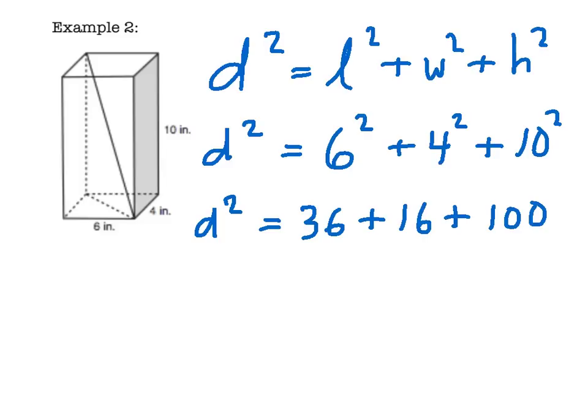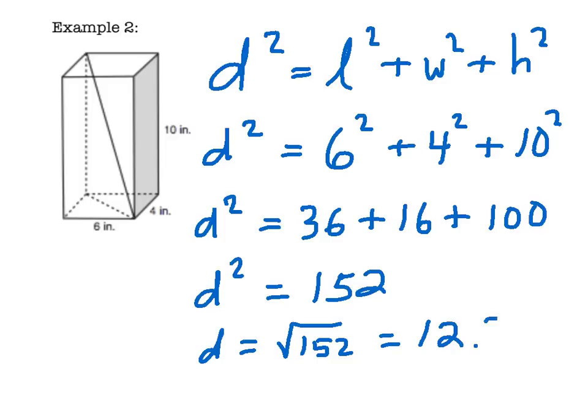Step four is to total up our terms. So if we add 36 plus 16 plus 100, we get 152. D then is going to be equal to the square root of 152. And when I punch that into my calculator and round to the tenths place, I get that our diagonal is 12.3 inches.